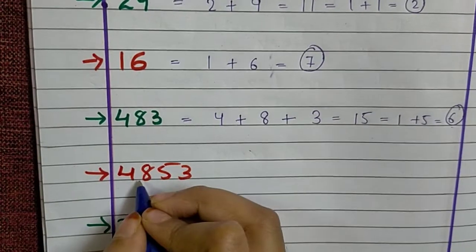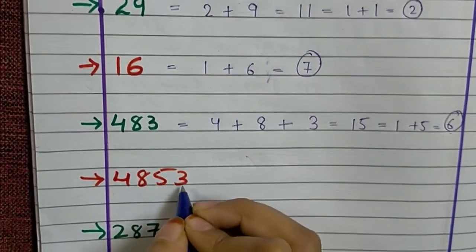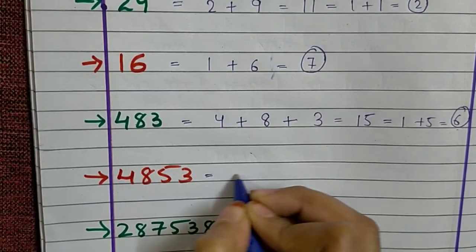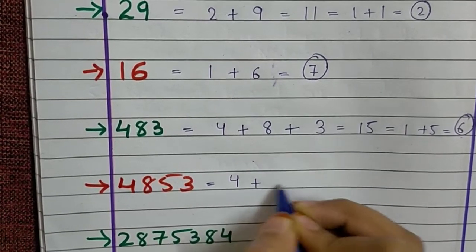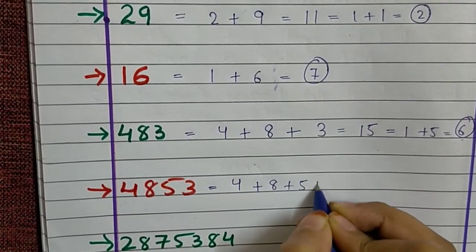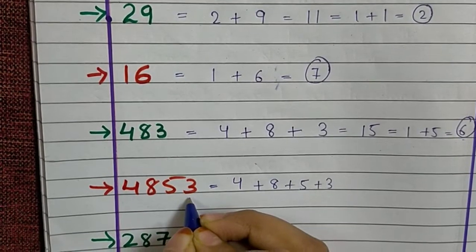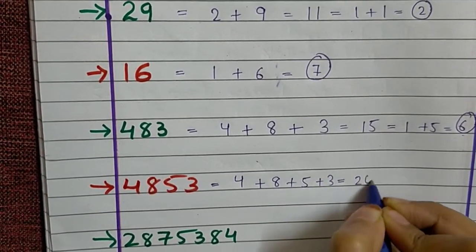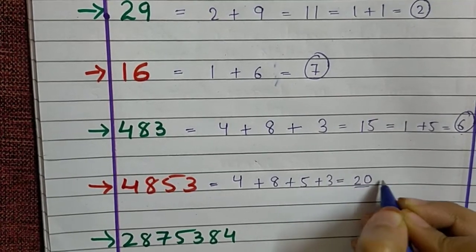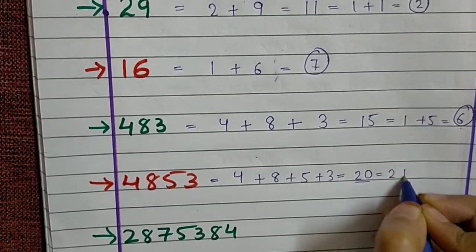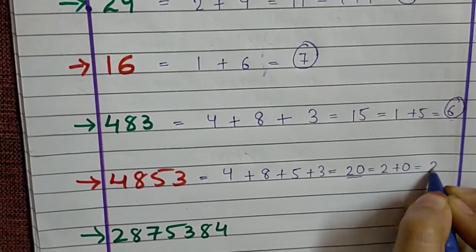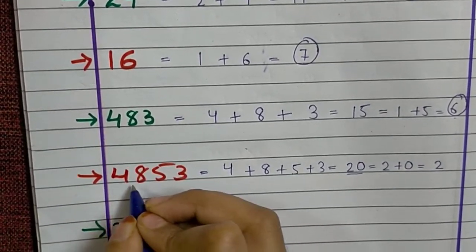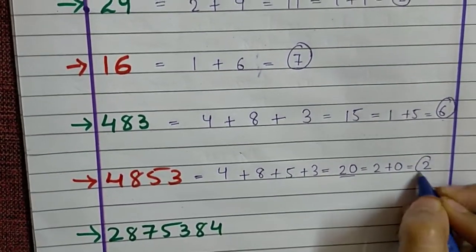Next number is 4853. 4 plus 8 plus 5 plus 3. We will add all the digits and the answer will be 20. So again it is a 2 digit number. 2 plus 0. So it will be 2. So the Beejank of 4853 is 2.